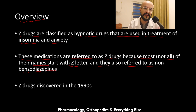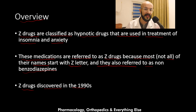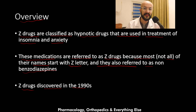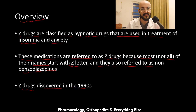The Z-drugs were discovered in the 1990s. In comparison with other hypnotics, the barbiturates were discovered in the early 1900s, and the benzodiazepines were discovered in the 1960s.